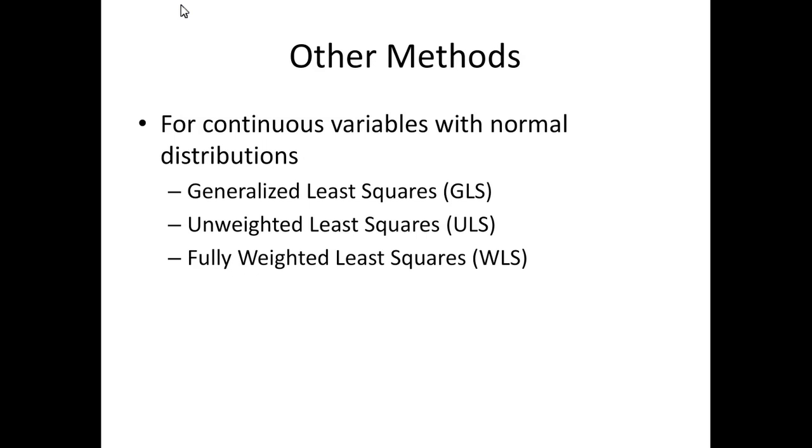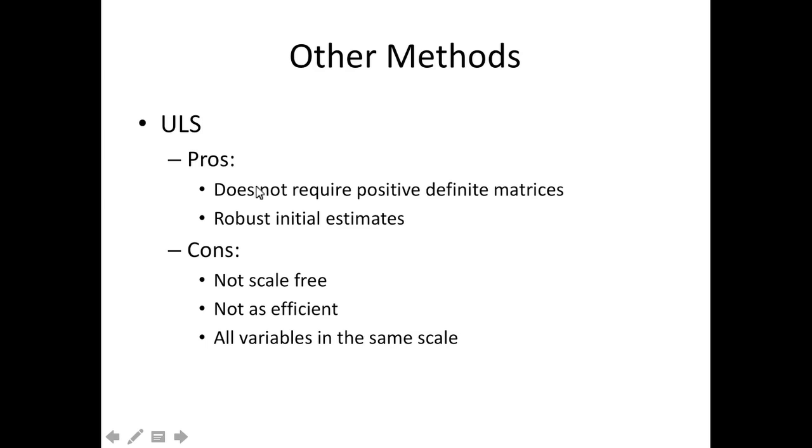Now some other methods of estimation. If you have a continuous variable with a normal distribution, you can use generalized least squares, unweighted least squares, or fully weighted least squares. So I see a common theme here is least squares estimation. Which one's most popular? Probably unweighted least squares.